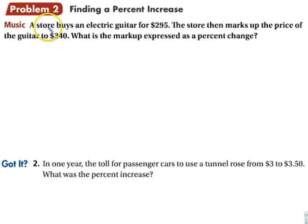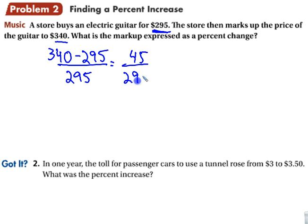Percent of increase. Now, they buy an electric guitar for this much, and that's the new price. So we're taking big minus small over the original. This is the starting price. They mark it up. They charge us more than we would if we were buying it from the original people. So we get 45 over 295, and then we change it into a decimal, and then into a percent.